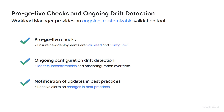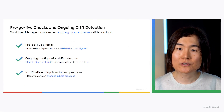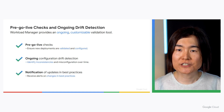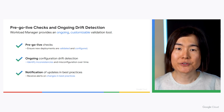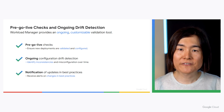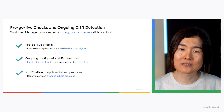Workload Manager provides an ongoing customizable validation tool. You can use it for pre-go-live checks for new deployments to validate your workloads are configured against Google Cloud best practices, ongoing detection against configuration drift that may be introduced during system updates, patches, and troubleshooting, and continuous notification alerting of changes in your workload best practices on Google Cloud.